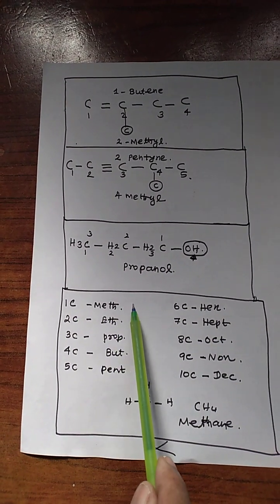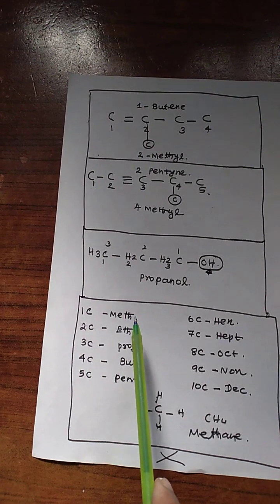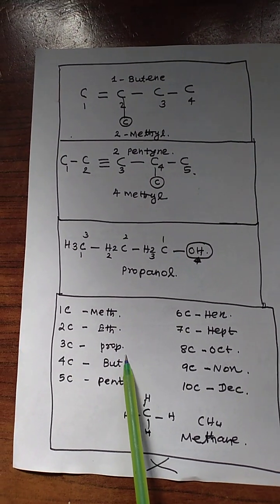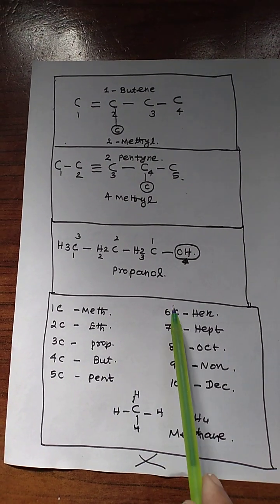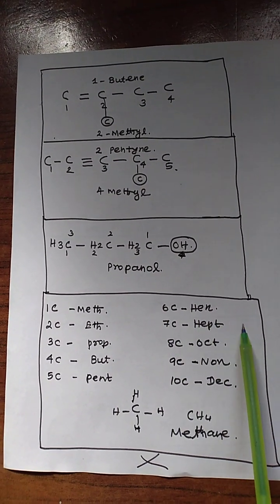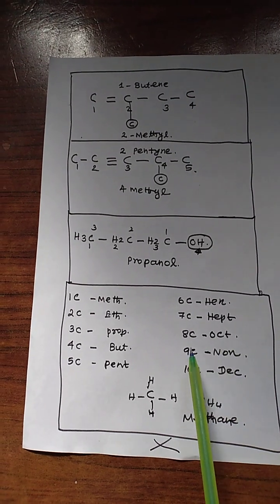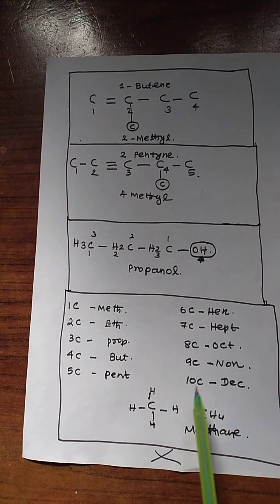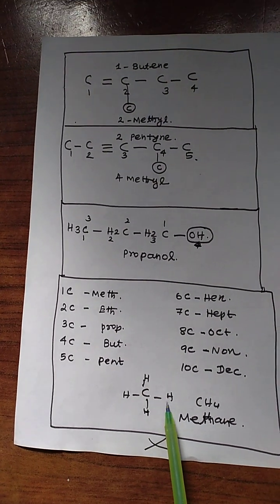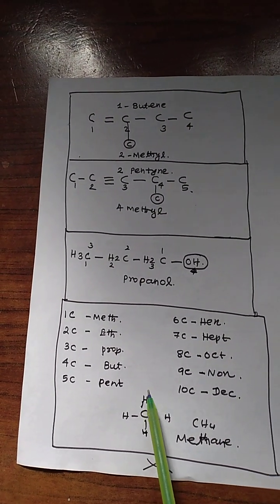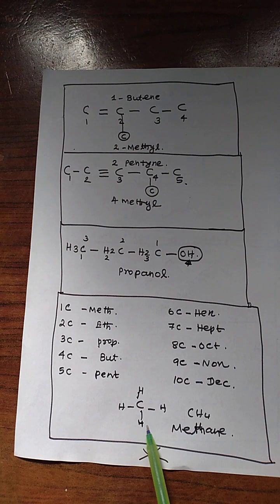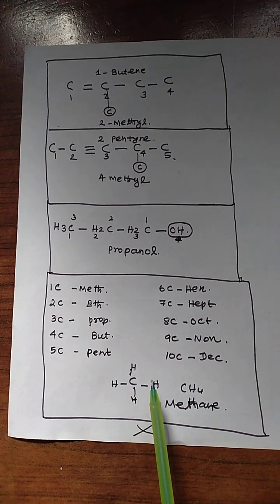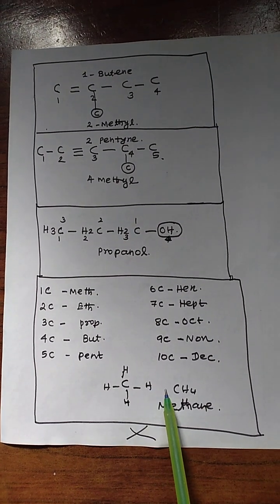1 carbon means methane. 2C means ethane. 3C means propane. 4C means butane. 5C means pentane. 6C, hexane. 7C, heptane. 8C, octane. 9C, nonane. 10C, decane. So this is the example for C connected to 4 single bonds with hydrogen — CH4 is methane. This is the symbol and structure for methane.